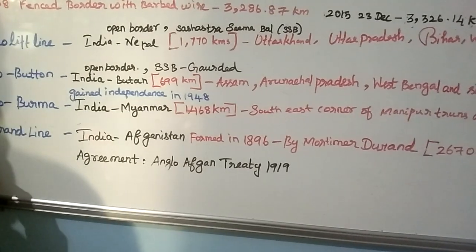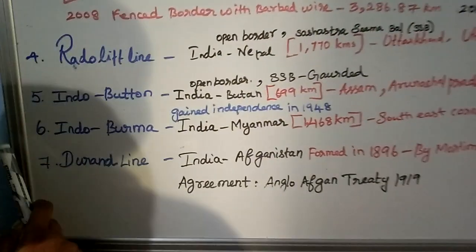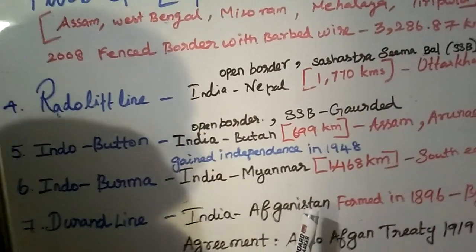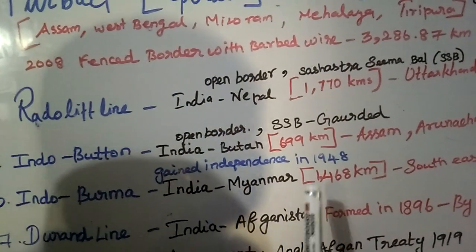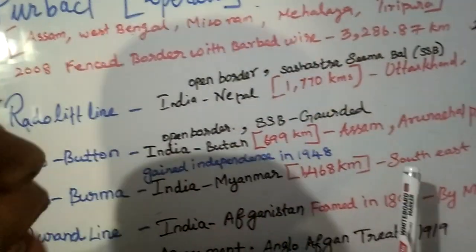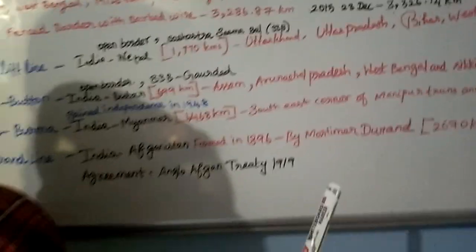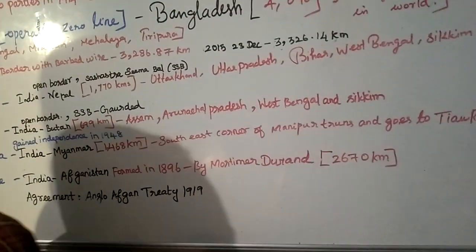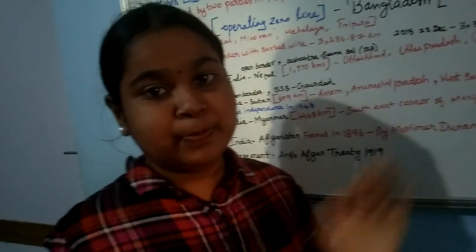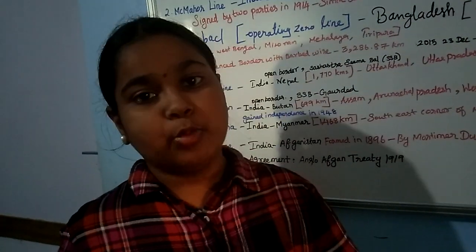Now let's see about the Indo-Burma border, which is the border between India and Myanmar. It is 1,468 km. At the east-west corner of Manipur, it goes to join the Tiau River, which is the river running through Manipur — so that border goes and joins the Tiau River.